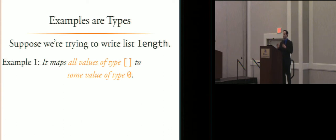It maps all values of type empty list. In fact, it's a type with exactly one inhabitant, the empty list.